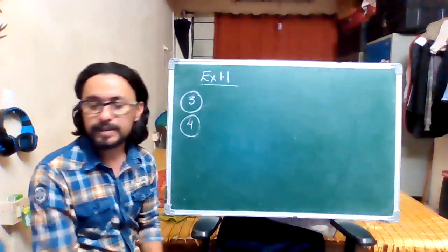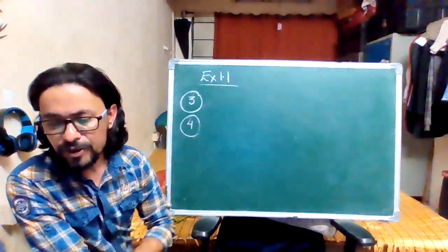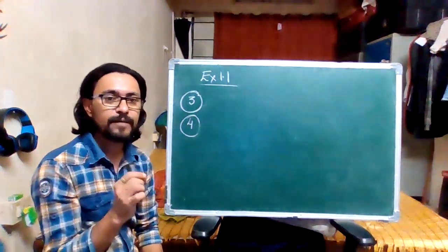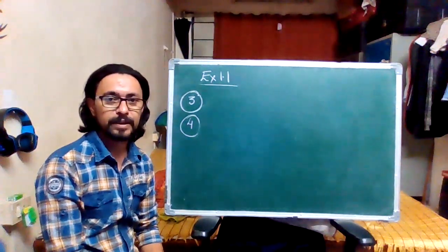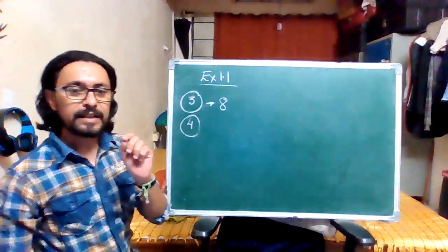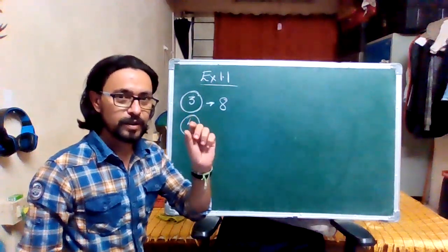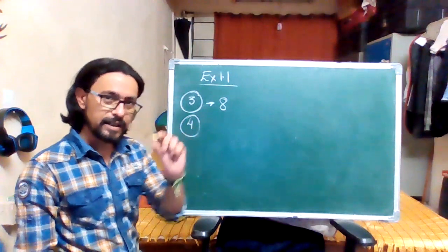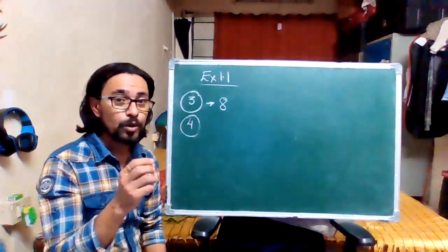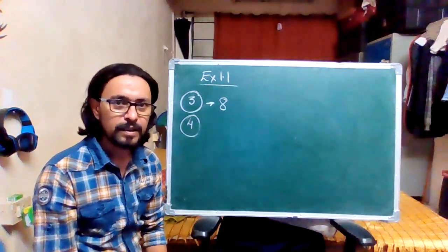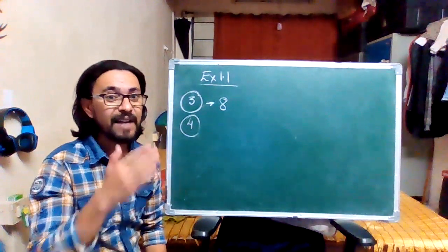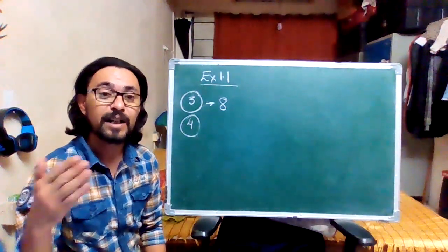Now we go to sum number 3. Sum number 3 says: which digit in the number 4,578 has the same face value and place value? For a digit to have the same face value and place value, it has to be right at the end of a particular number — that means it has to be in the unit's place. Here, in the unit's place, we have number 8, so the answer is 8. Because if you take the digit 8 from that number, it's right at the end — when you take it down, there are no digits after it that have to be converted to 0.